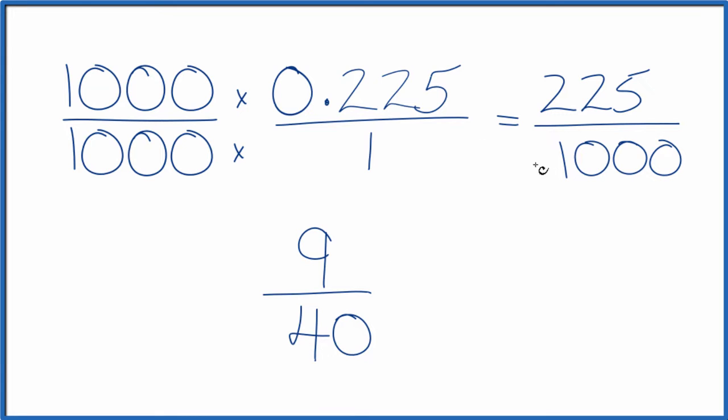So in answer to our question, the decimal 0.225, it's equal to 9 over 40. If you divide 9 over 40, or 225 by 1,000, you'll get 0.225.